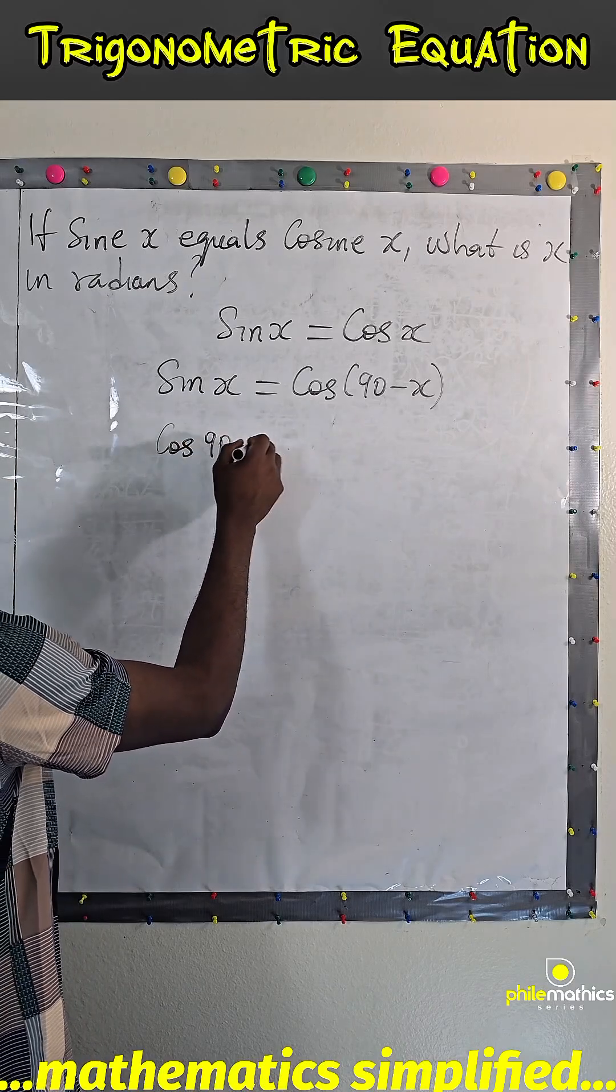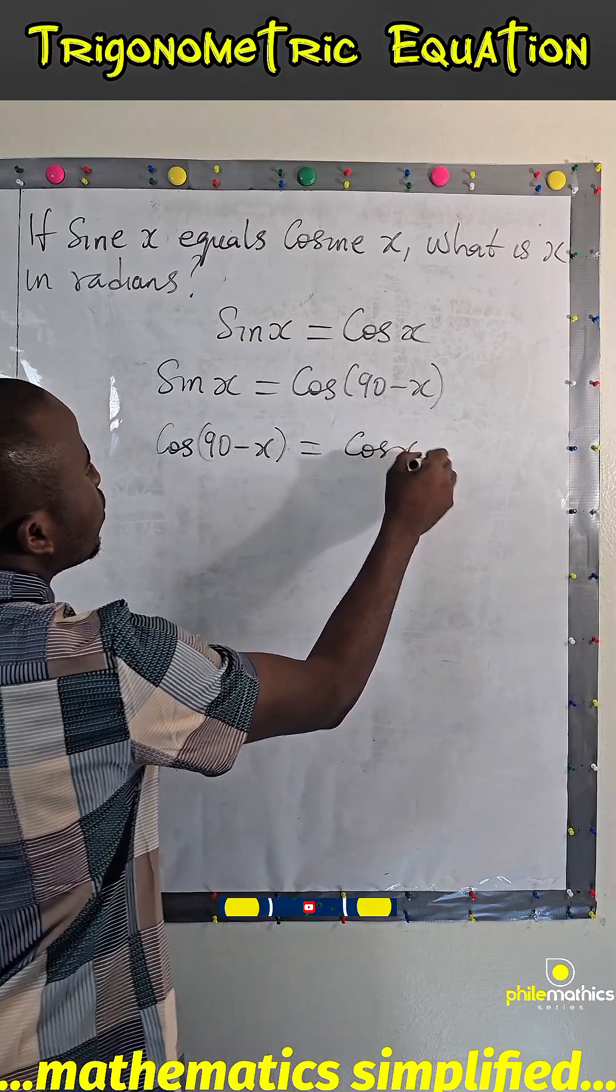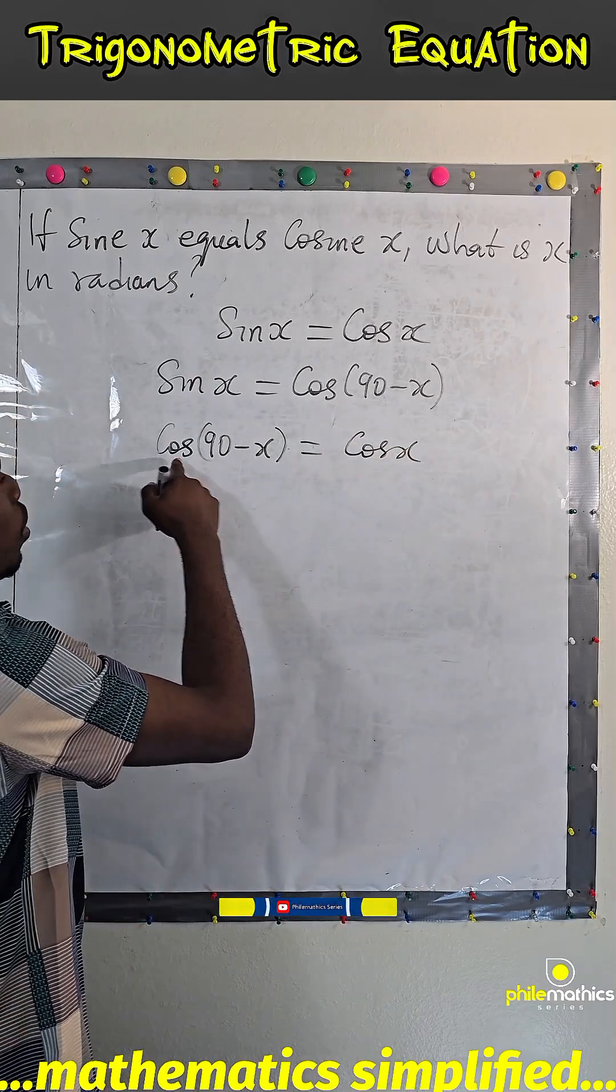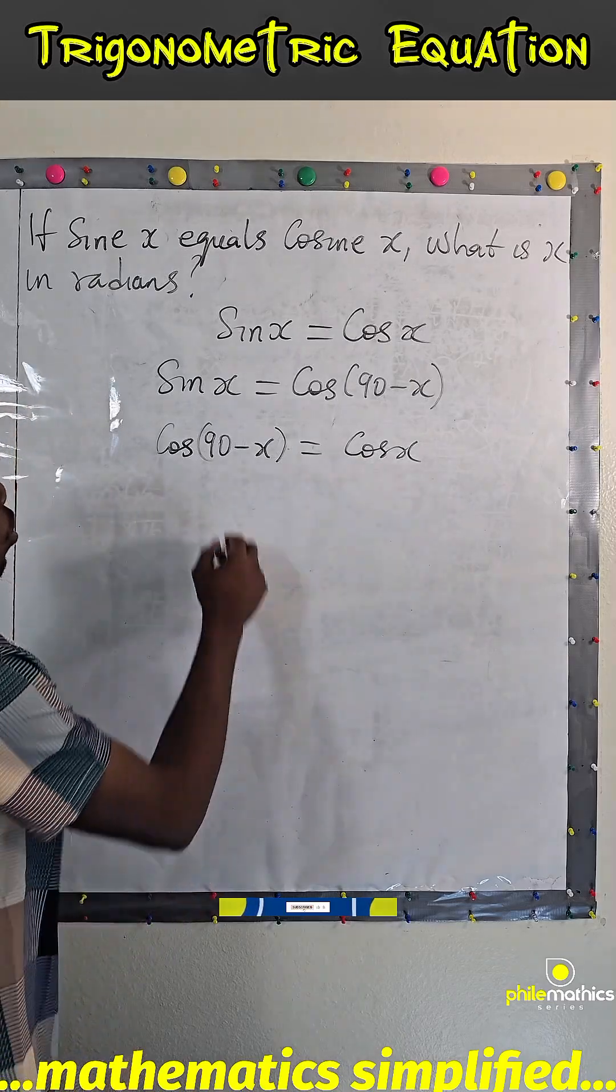So cos 90 minus x equals cos x. Since these two are cosine, their angles have to be equal.